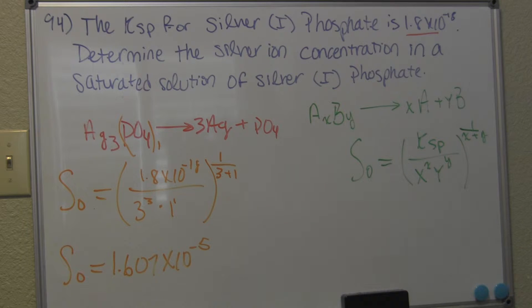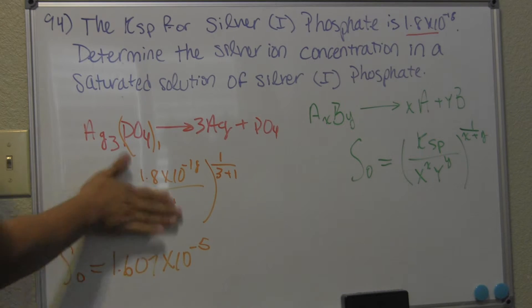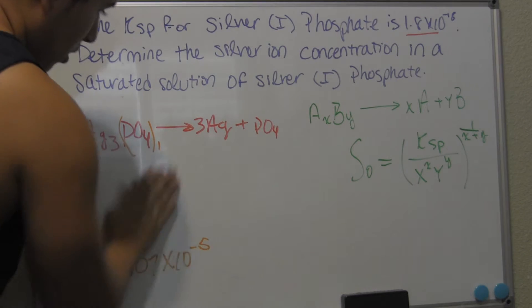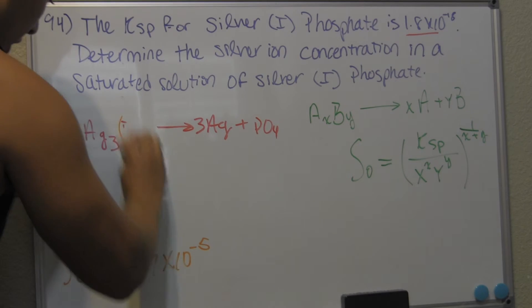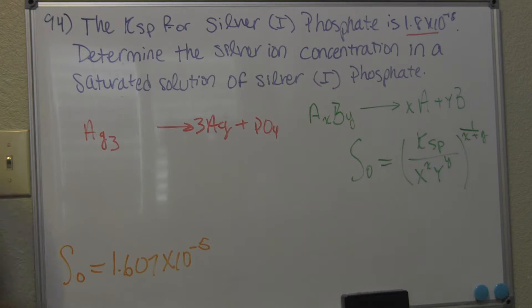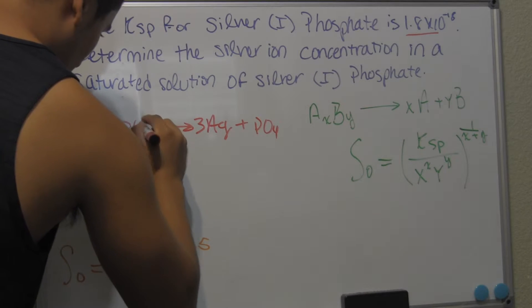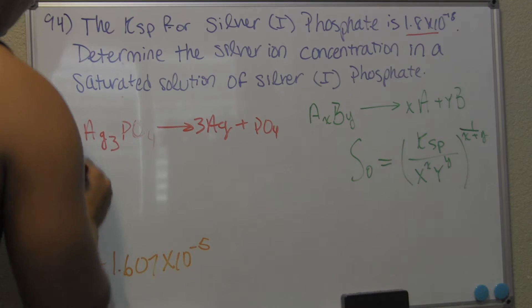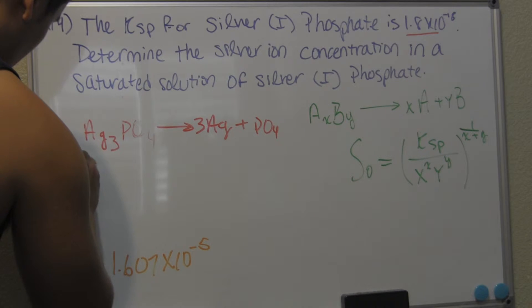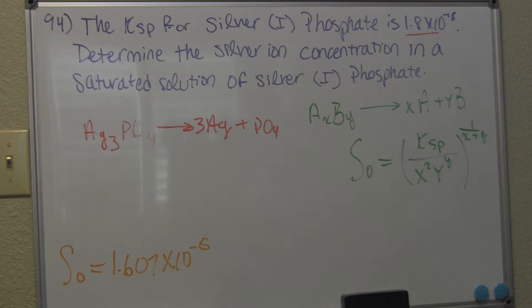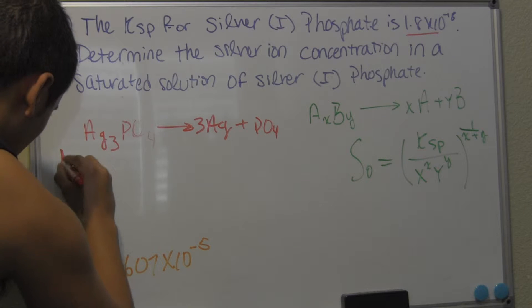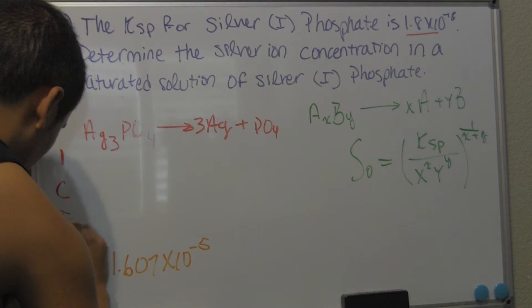Now I'm going to be erasing the equation to make space for our ice table. Let me just rewrite that. So we have initial, let's use the other side. Initial, change, equilibrium.